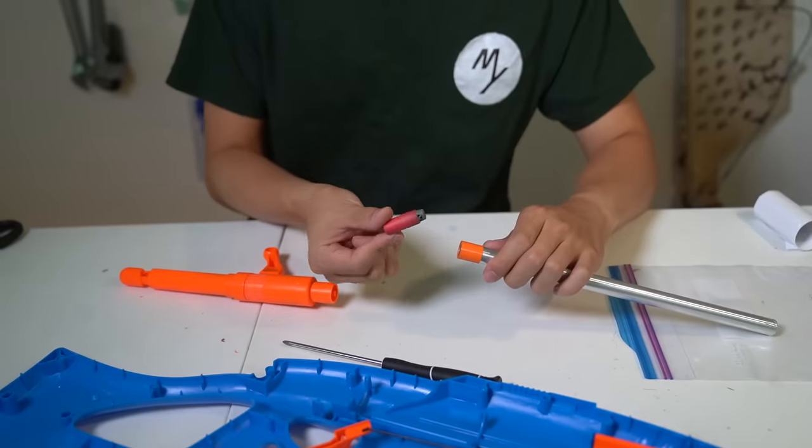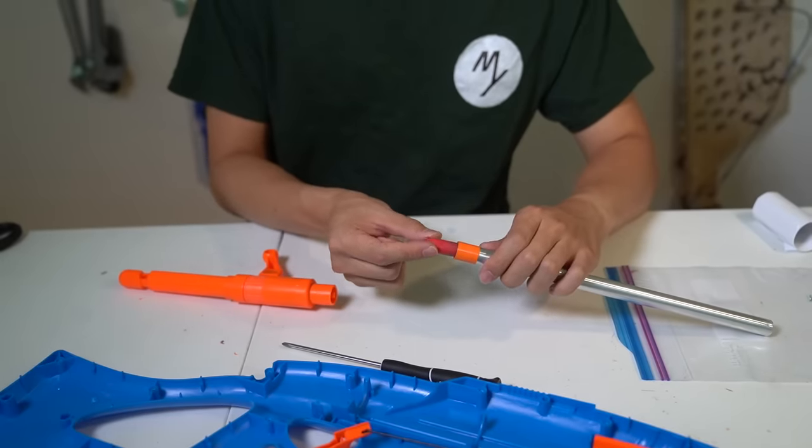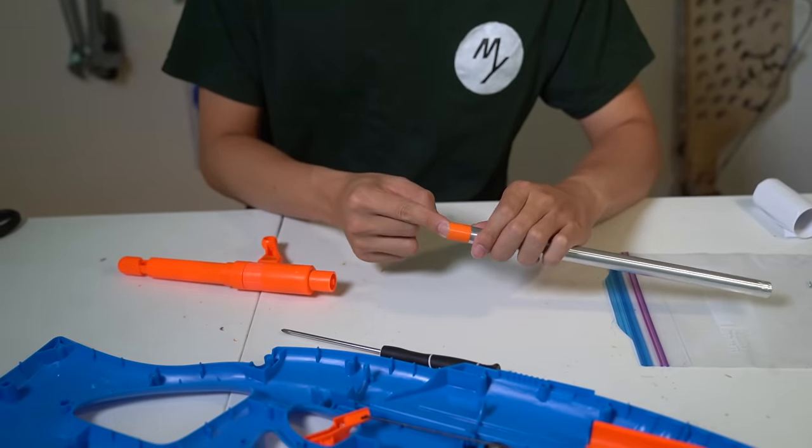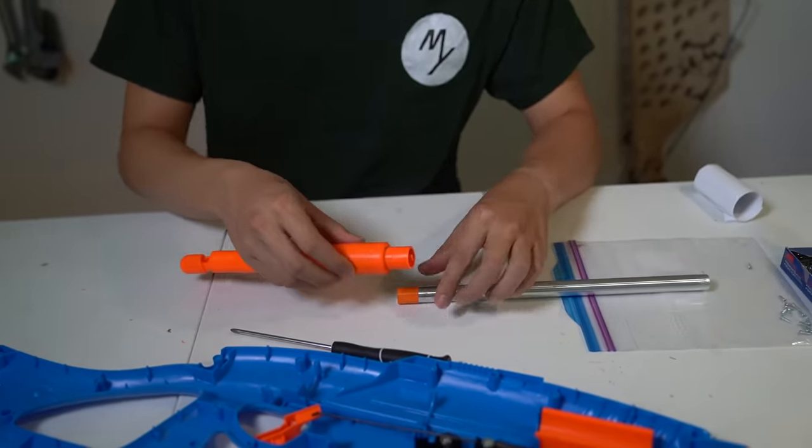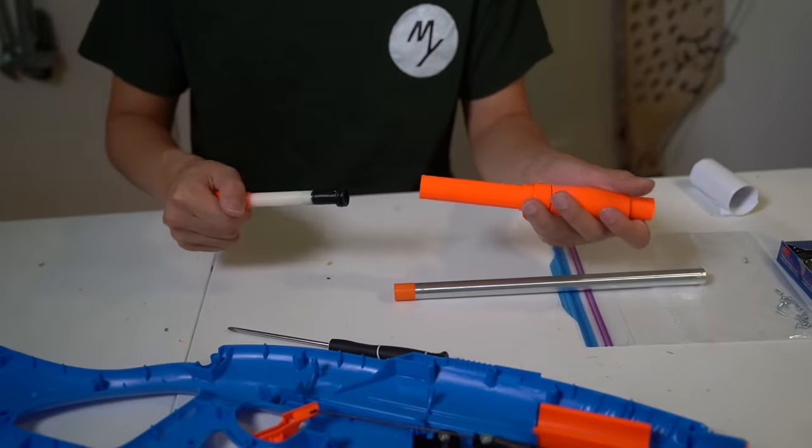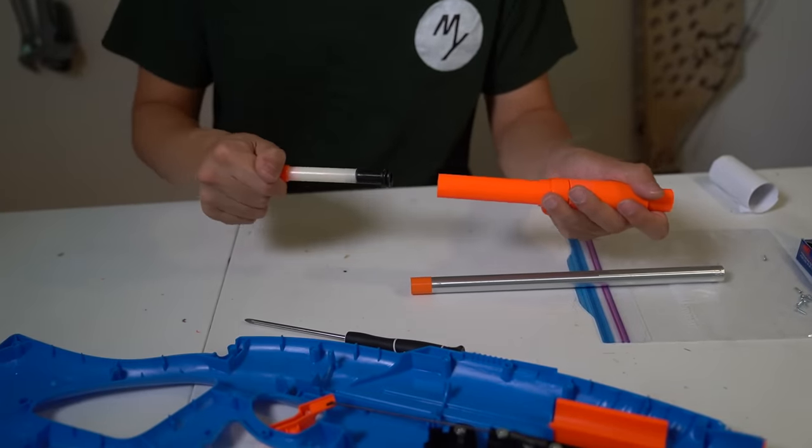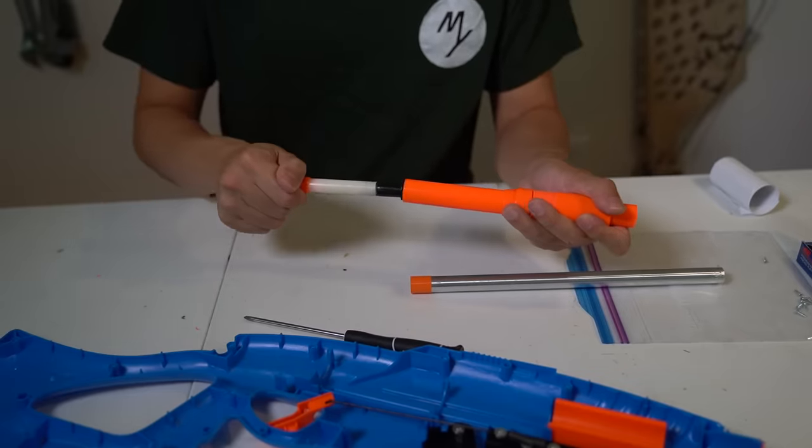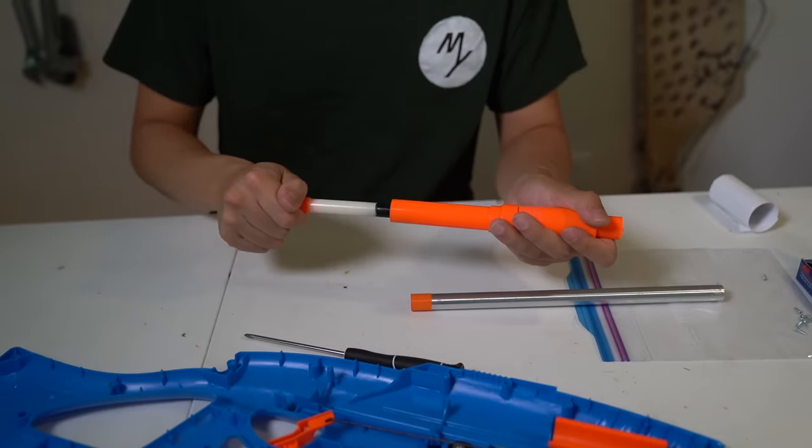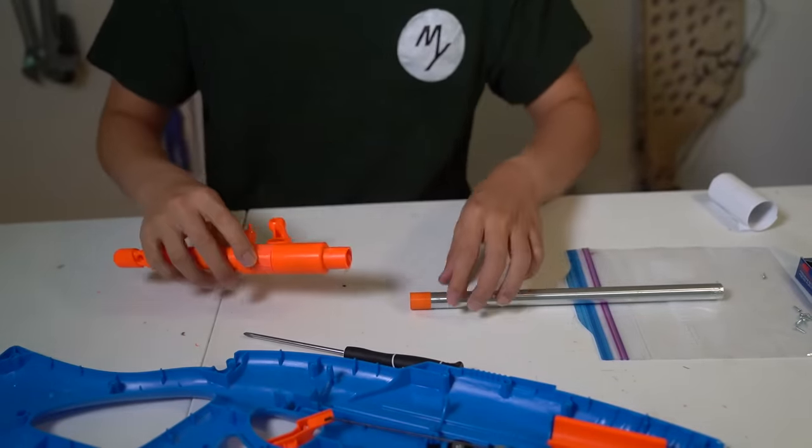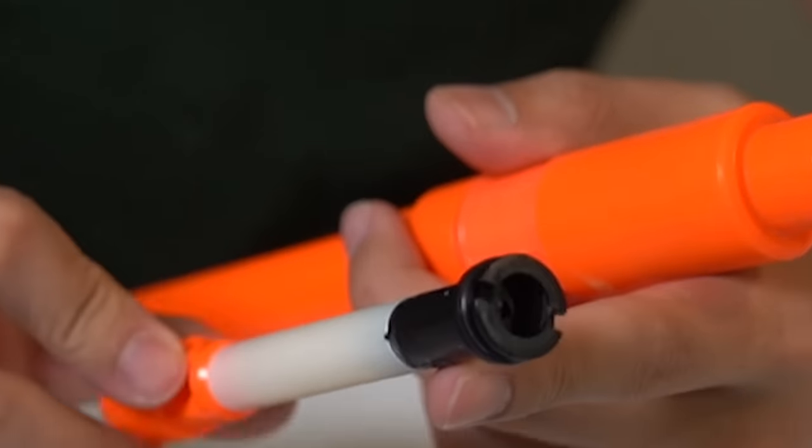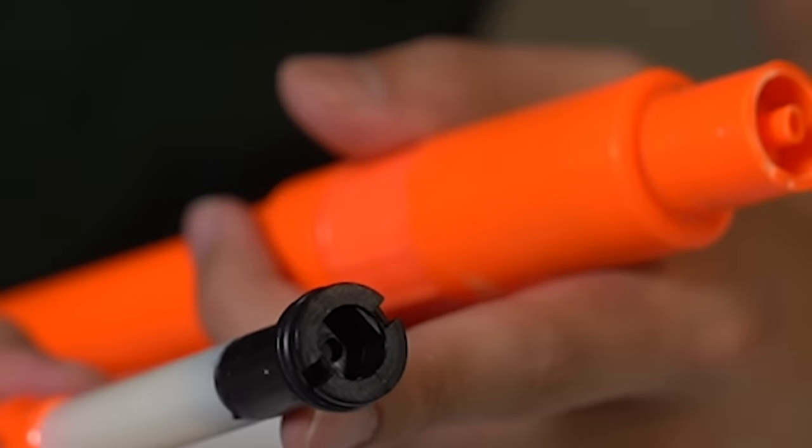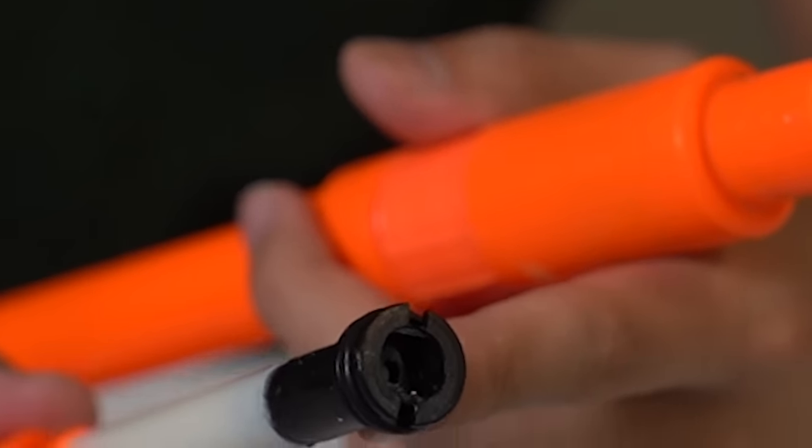The natural thing to do was to add more pumps, but there was a problem. Starting at the fourth pump, the pump sound changes and you can hear air leaking past the pump seal and not making it into the tank. This is because the manufacturers have put an overpressure relief valve in the head of the pump to make sure that you don't pressurize the tank more than they want you to.